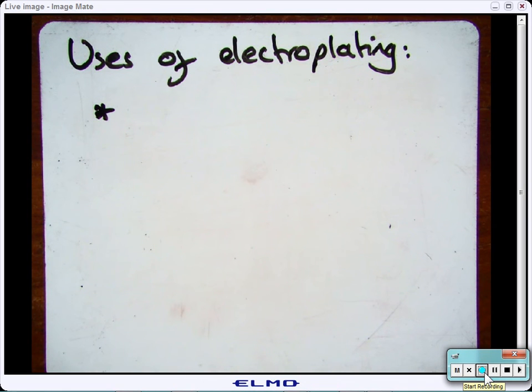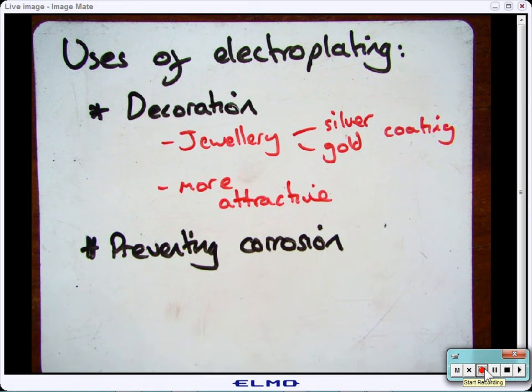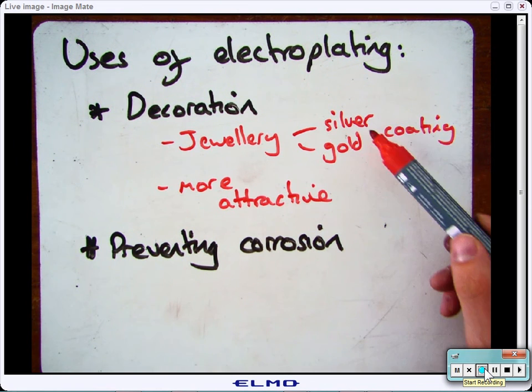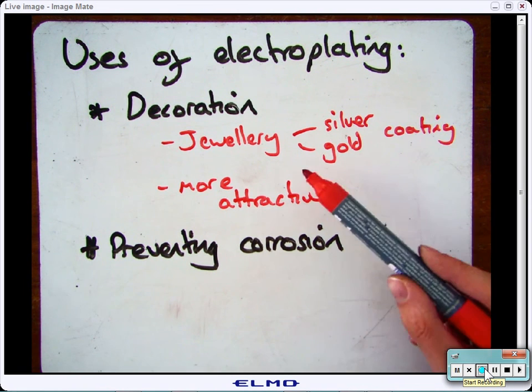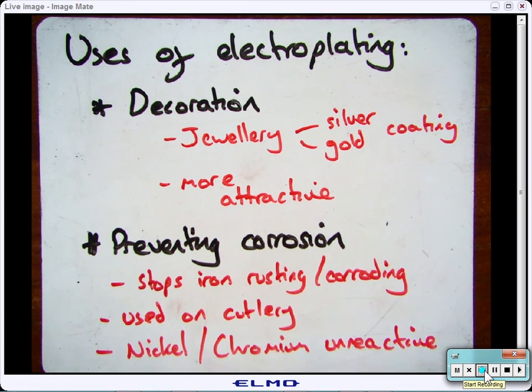Electroplating can be used for many different things. The two main ones are decoration and preventing corrosion. For example, jewellery can be coated in silver and gold which makes it look more attractive. A lot of cutlery is made out of iron which rusts and corrodes. So they'll use electroplating with either nickel or chromium which is unreactive. That will go onto the iron cutlery and stop it from rusting.